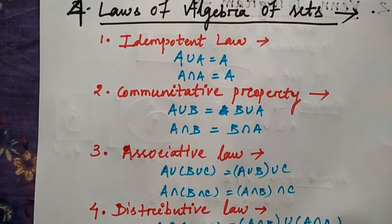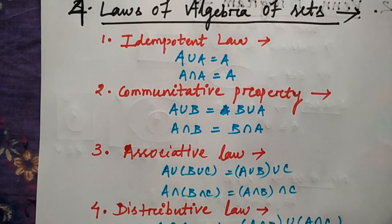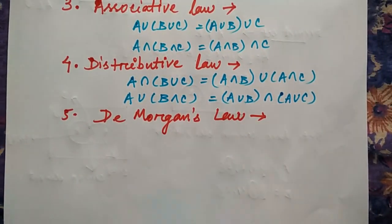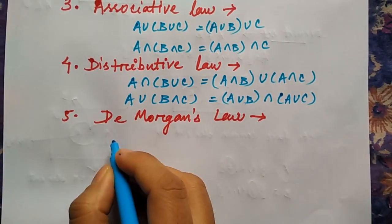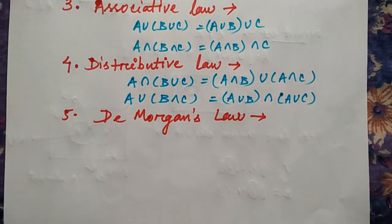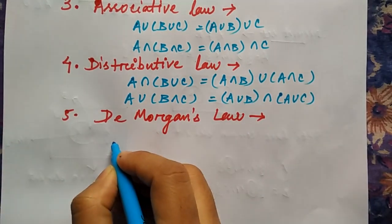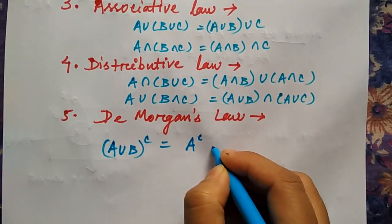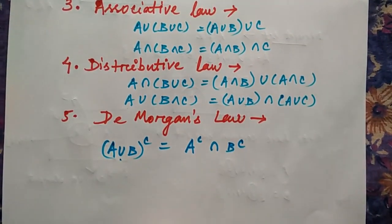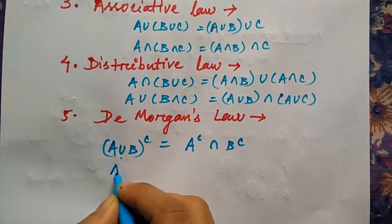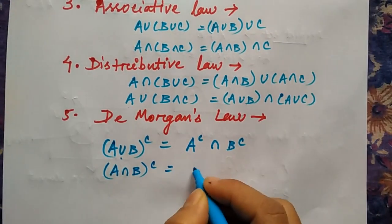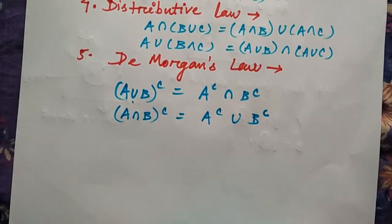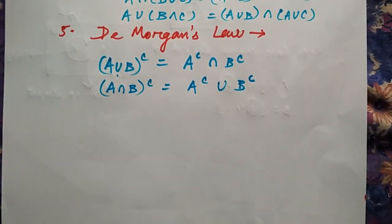Similarly, A union (B intersection C) equals (A union B) intersection (A union C). Then comes De Morgan's law, which is very important. It states that the complement of (A union B) equals A complement intersection B complement — whatever operation you are taking, you reverse it and take the complement.